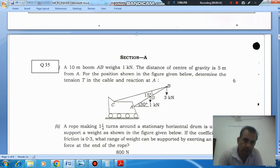A 10 meter boom AB weighs 1 kN. The distance of center of gravity is 5 meters from A. For the position shown in the figure given below, determine the tension T in the cable and reaction at A.